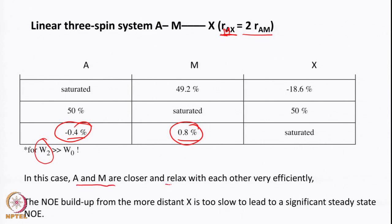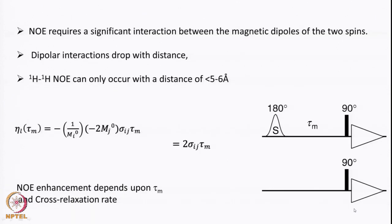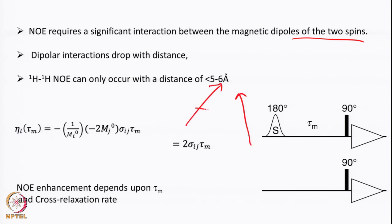When distances change, enhancements differ — demonstrating that NOE buildup can be measured as a function of distance. This is done via transient NOE. NOE requires significant magnetic dipole interaction between two spins; dipolar interaction varies with distance, and NOE between two protons can be measured up to 5–6 Å. The enhancement depends on distance, and in transient NOE the experiment also depends on the mixing time τ_m.